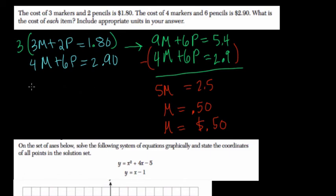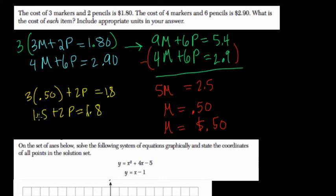The pencils, we can figure out by plugging in. 3 times markers, 0.5, plus 2 pencils equals $1.80, right? So that's 1.5 plus 2p equals 1.8. So 1.8 minus 1.5 is 0.3, and 2 pencils then equals $0.30, and each pencil then equals $0.15.